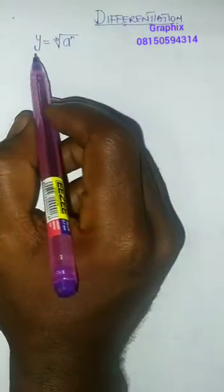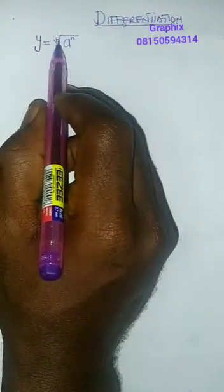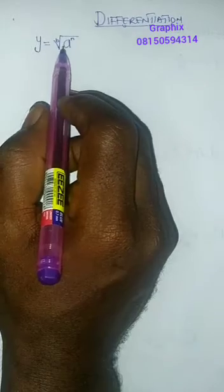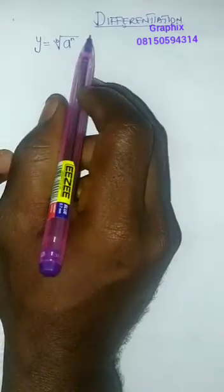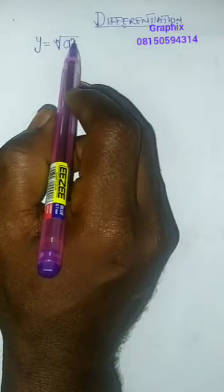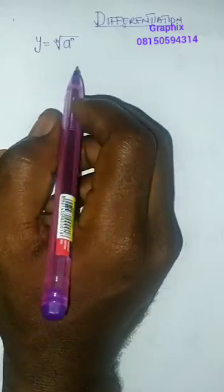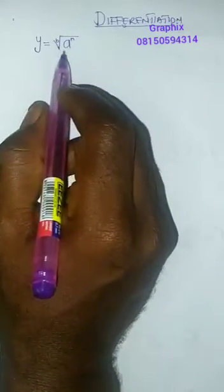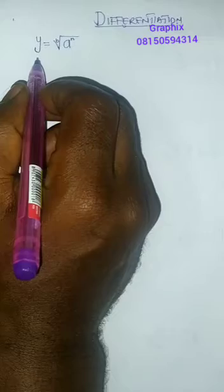Now look at this, we have y equals the b-th root of a to the power n. Now if I want to rewrite this, it's also written as y equals a to the power n over b. Whatever is inside the root will be under here, that's what I wanted you to understand.